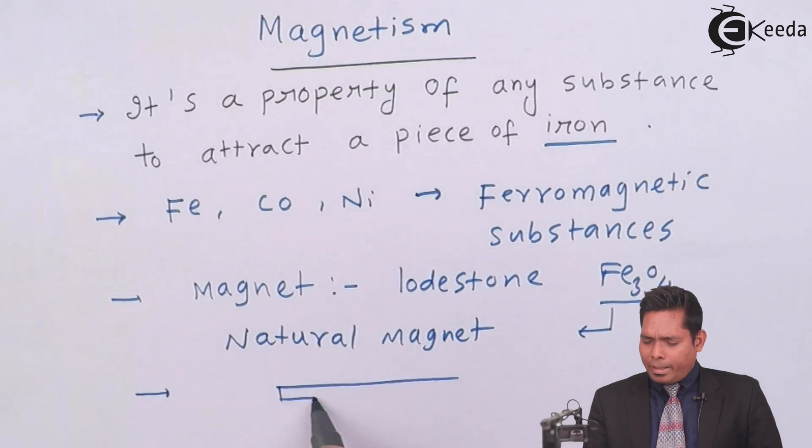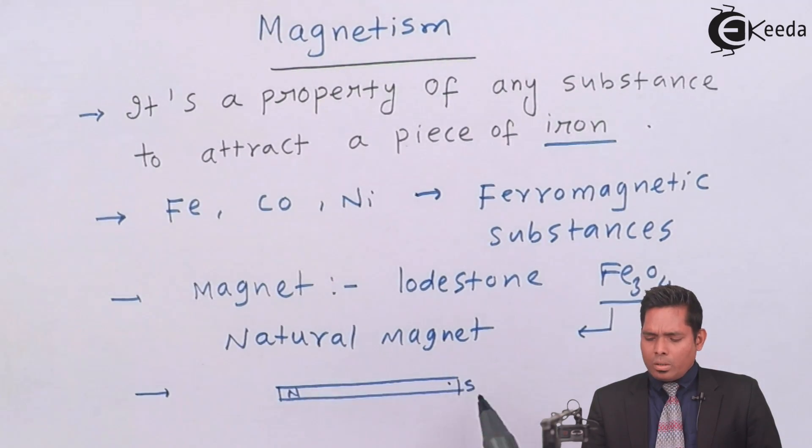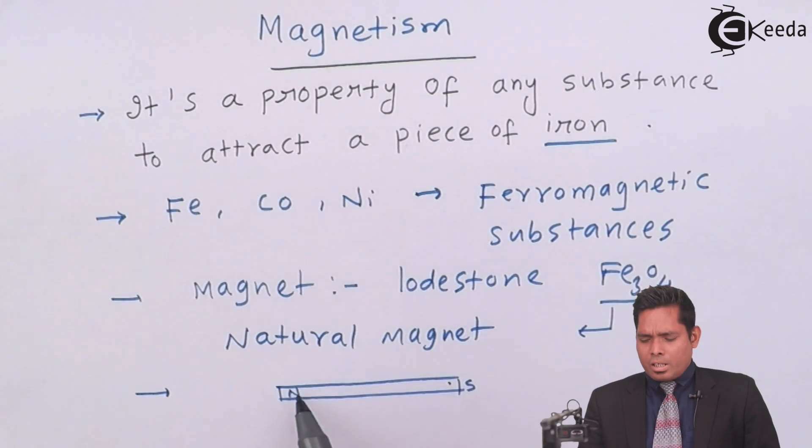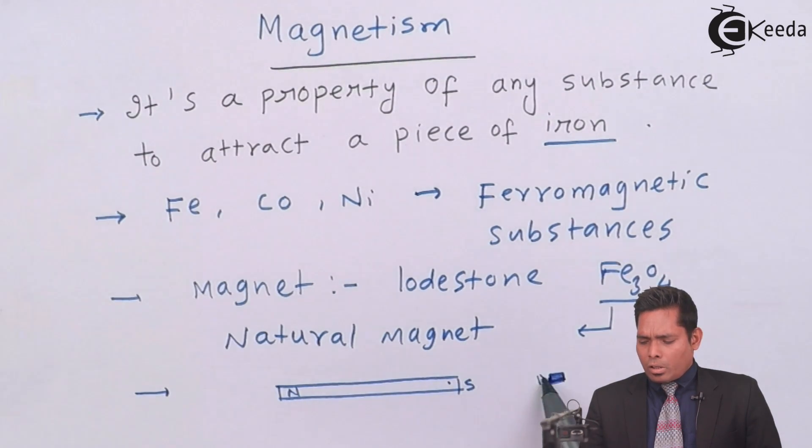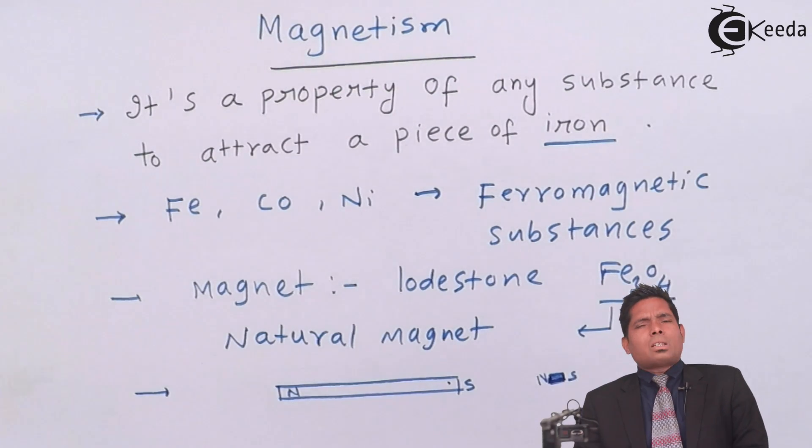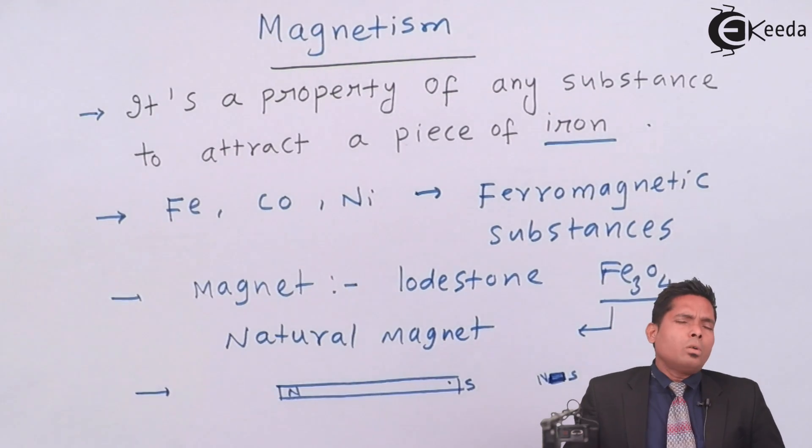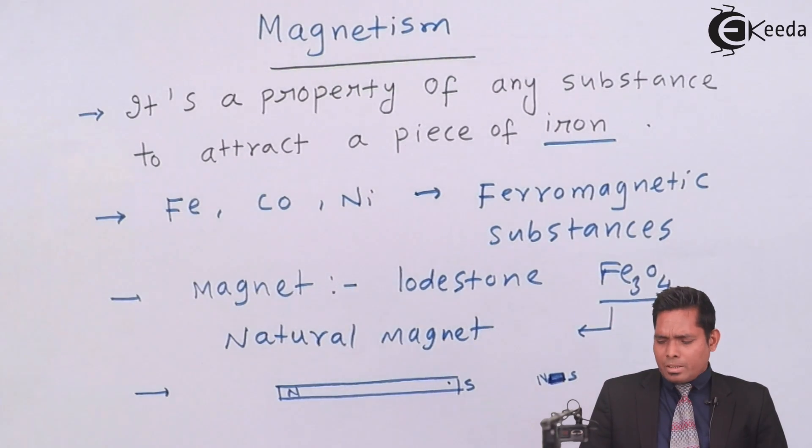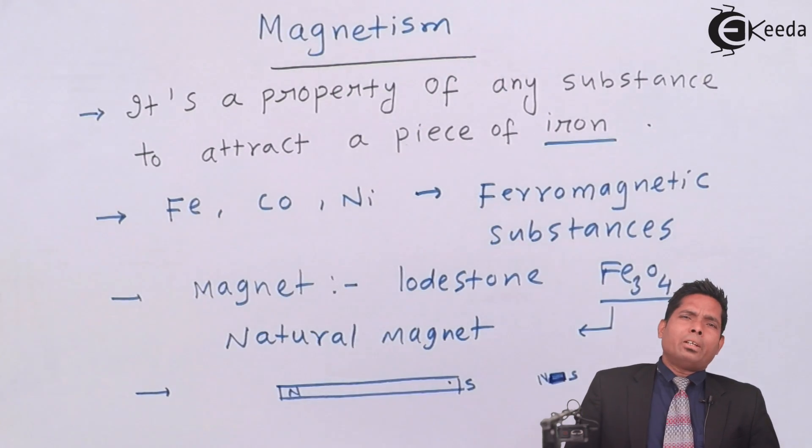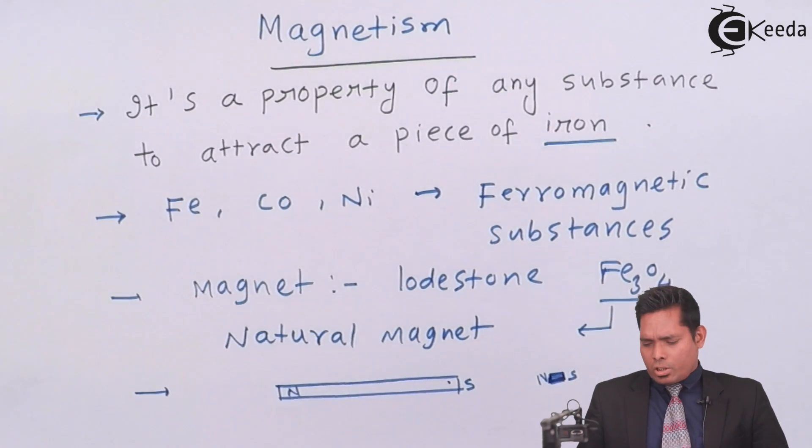That means the point I want to make is that if you have a bar magnet, north pole, south pole, if you break into infinite number of parts, even if the smallest of the part, that will also have both the poles, that is north pole and south pole. That means you cannot separate south pole or north pole from a magnet. That means isolated magnetic pole does not exist.